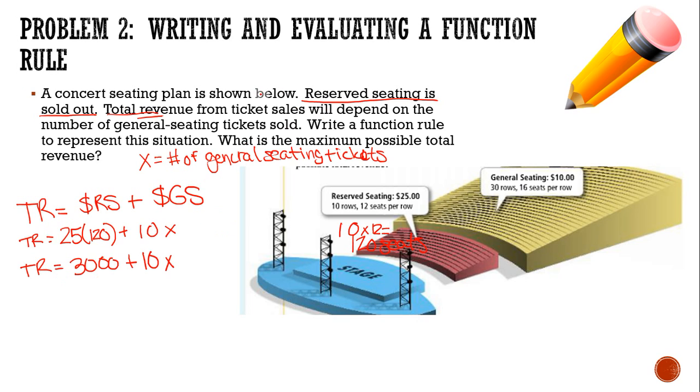So then, I'm going to do 25 times 120, and I'm going to get $3,000 plus 10X. Now, they actually want me to evaluate on this one. So I need to find the maximum possible total revenue. So I want to maximize my X. X was the general seating ticket. So I know that I need to think, what if I do a full house, sold out? So that means 30 times 16. So let's do 30 times 16, and that gives me 480 tickets that I can possibly sell here. There are 480 seats in general seating.